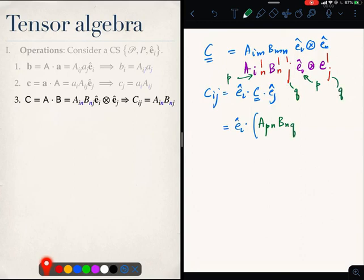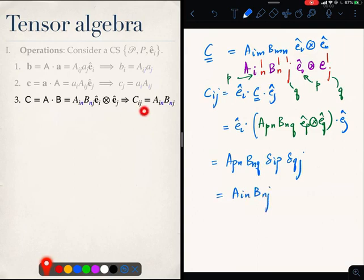So, B_nq e_p tensor e_q and then I am back to my e_i dot C dot e_j. Now, that is a constant. So, it can be pulled out. This will operate here. These two will collide and I will get back A_pn delta_ip B_nq delta_qj. There is a p, there is a p. So, a contraction of i and p. I made a mistake here. I forgot to put in B_nq and there is a q here, there is a q here. So, there is a contraction of q and j and when I do that, I will get A_in B_nj which is what this formula is.